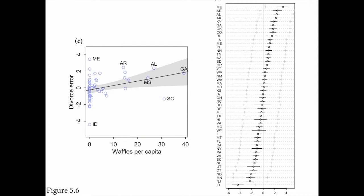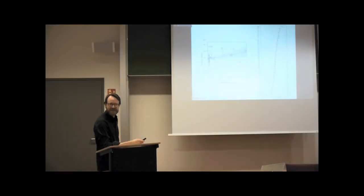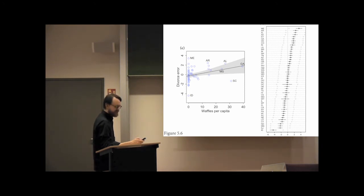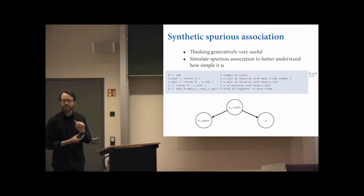A final example: correlations remain in the residuals in this model. It continues to be true that waffles per capita is correlated with divorce after accounting for all the other predictors. You take the residuals and plot them against waffle houses per capita — there is still a positive correlation, with almost all posterior probability for the slope being greater than zero. I continue to believe that waffle houses do not cause divorce, so there's still something else — some historical accident. This is the danger: no matter what you control for, there may still be spurious associations, and we're going to spend the rest of the day talking about some of those additional reasons.